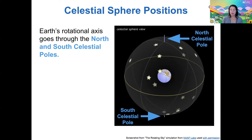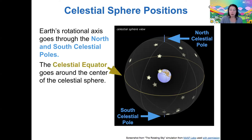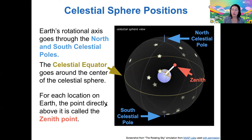So the celestial sphere has some important points to orient yourself. The north celestial pole and the south celestial pole are basically extensions of earth's north and south poles. Earth rotates about its axis, and if you extend the north part of that axis up, you hit the north celestial pole, and south to the south celestial pole. The celestial equator is basically earth's equator projected out onto the sphere. And every location on earth has a special point called the zenith — if you look straight up, that's your zenith. Every point on earth has a zenith that points somewhere different on the celestial sphere.